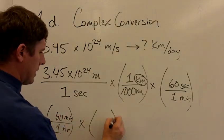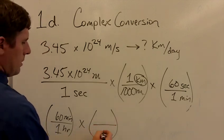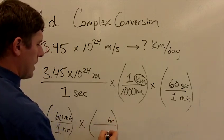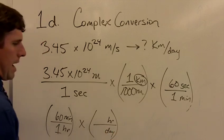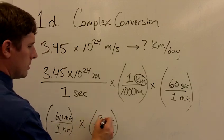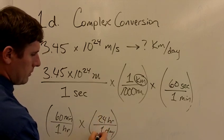Okay, but we're going to days, not hours, so we've got to keep going. We'll put hours on top now and days on the bottom. How many hours are in one day? 24 hours are the equivalent of one day.